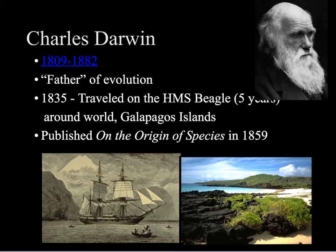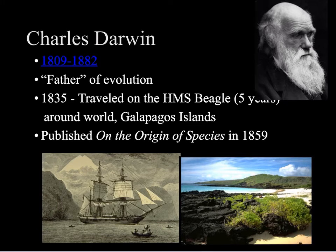When he came home, he spent almost the next two decades pondering everything that he saw, and he brought home hundreds and hundreds of specimens as well. He developed the theory of natural selection and finally published his book On the Origin of Species, but not until 1859. Because at the time, in the mid-19th century, this idea of evolution and of humans descending from ancestors that were around millions of years ago, and that the Earth was very old, was still quite a controversial subject.